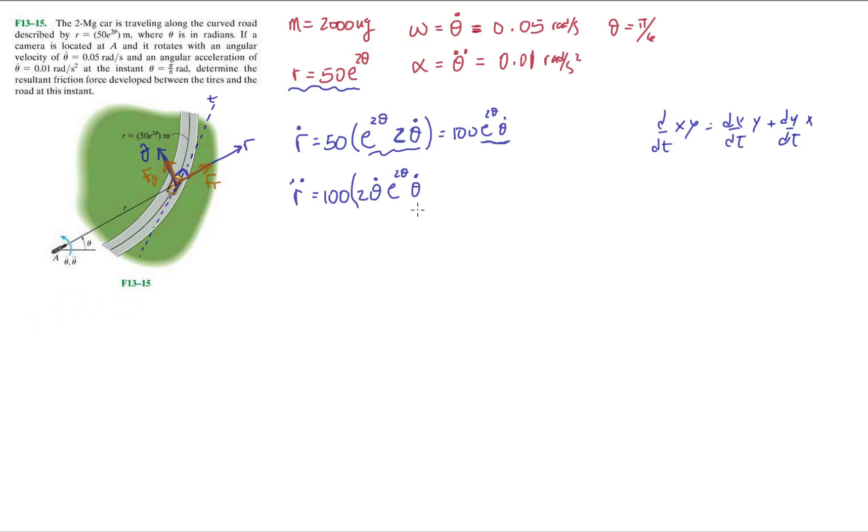Okay, and then plus, e to the 2θ, so we leave this term alone and we take the derivative of the second term, θ dot, not derivative of θ dot, which is going to be θ double dot. Okay, and that's it. So that's our second time derivative of r.